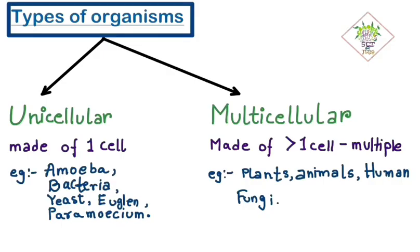Depending upon the number of cells present in an organism, they are classified as unicellular and multicellular organism. Uni means one, multi means many. So an organism which is made up of one cell is called unicellular organism. And an organism which is made up of more than one cell, it may be two, three hundred, lakhs of cells, millions or trillions, they are called multicellular organisms.